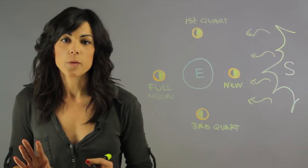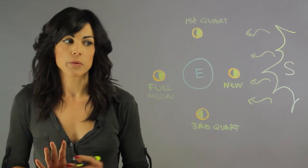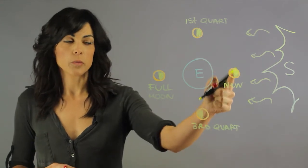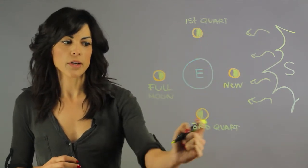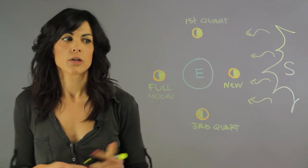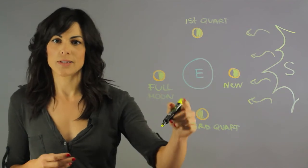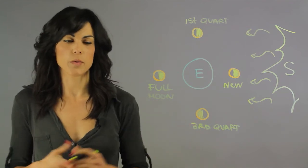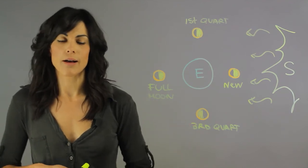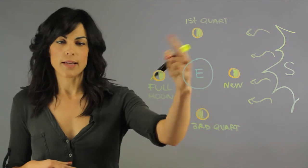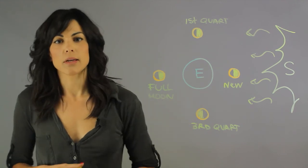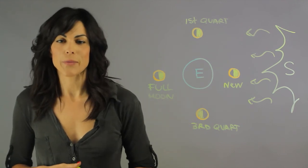So the four principal phases of the moon are: new moon, first quarter, full moon, and third quarter. You can always draw this diagram in order to remember the four phases, and this happens in a 28-day cycle.